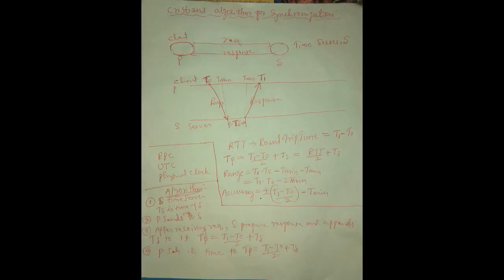Hi friends, welcome to distributed computing systems. In this video we will discuss Cristian's algorithm for synchronization. Synchronization means if one computer has the time 4:00 a.m. and another computer has 4:10 a.m., then both are not synchronized with each other. If both have the same clock, then we call them synchronized.